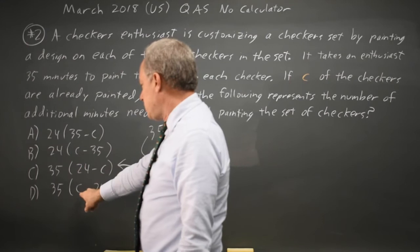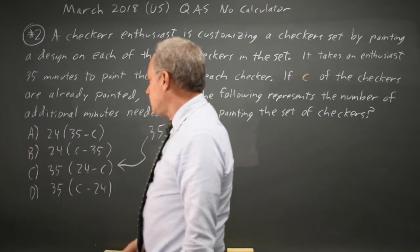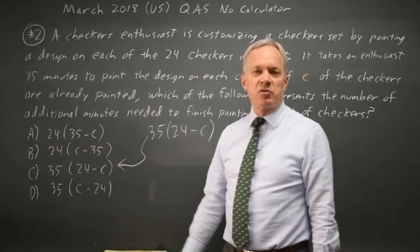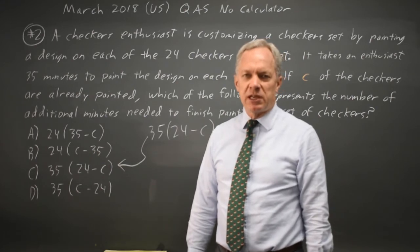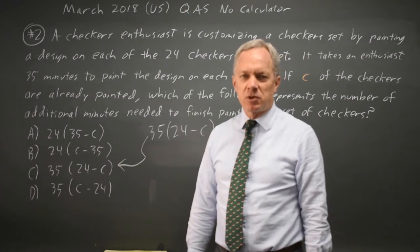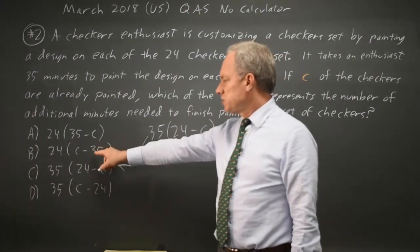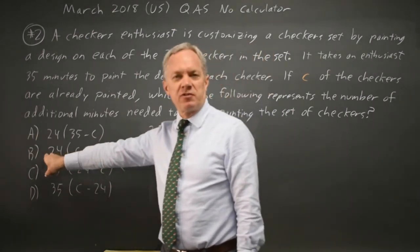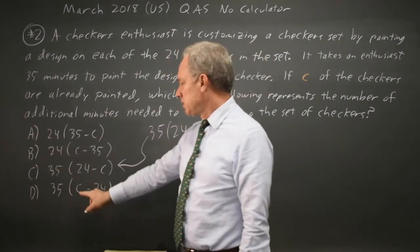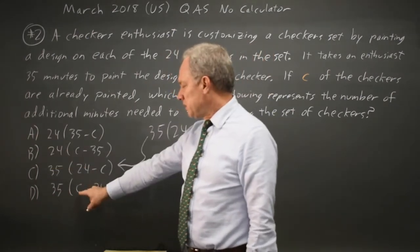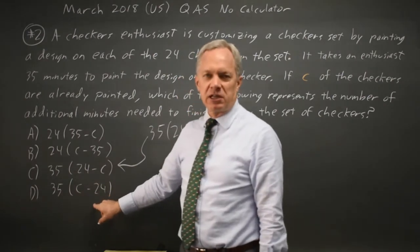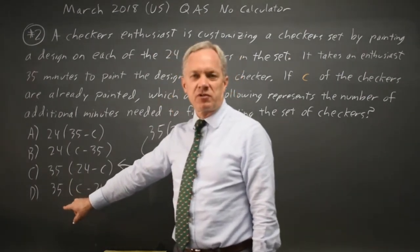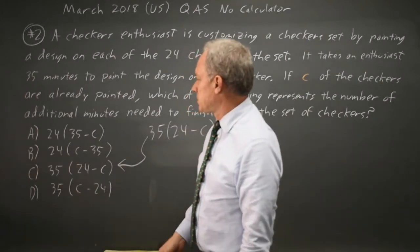Choices B and D give you a negative number. C, the number of checkers painted, has to be less than 24. So C minus 35 would be negative, times 24, which is a negative time to finish — that doesn't make sense. Similarly, C minus 24 is also negative, and multiplying by 35 minutes per checker gives you a negative time, which again doesn't make sense.